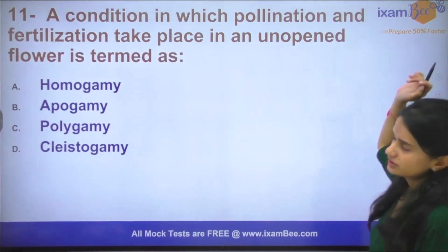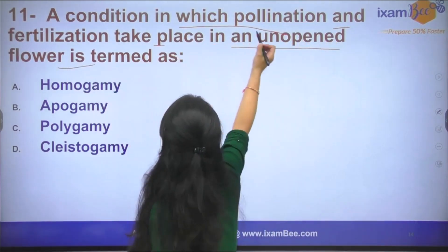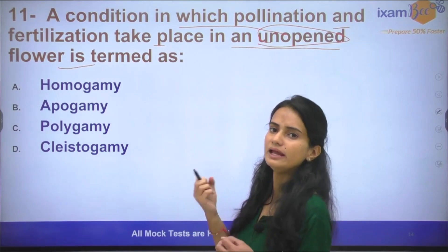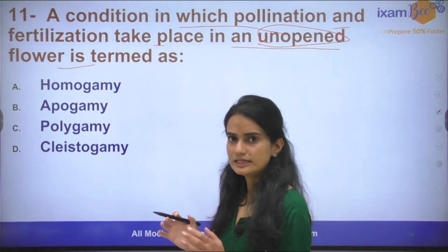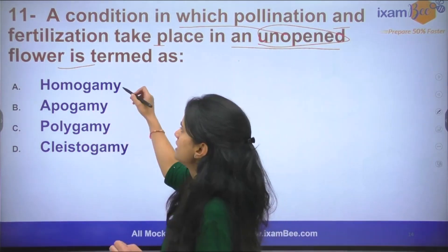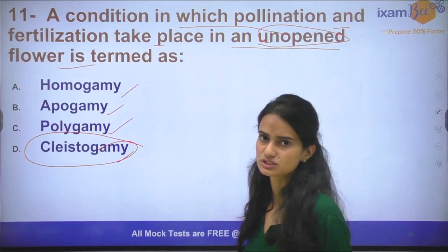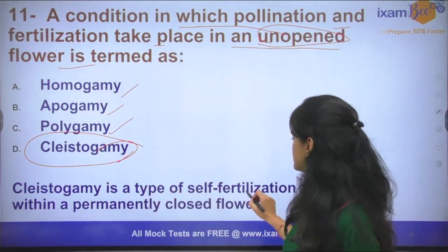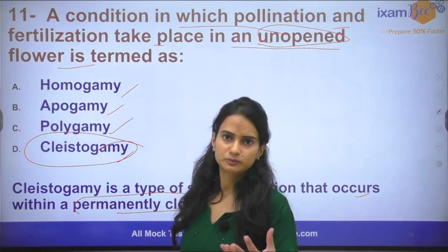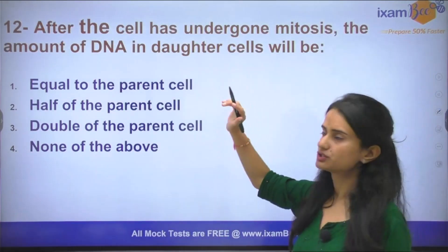The next question: A condition in which pollination and fertilization takes place in unopened flowers — meaning the flowers are closed and the stamens and female reproductive parts are not exposed — what do we call that condition? Is it homogamy, epogamy, polygamy, or cleistogamy? The answer is cleistogamy. Cleistogamy refers to flowers that are permanently closed — it is a type of self-fertilization process that occurs within permanently closed flowers.